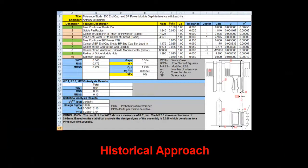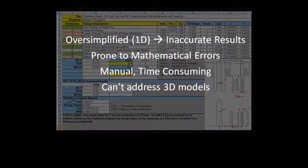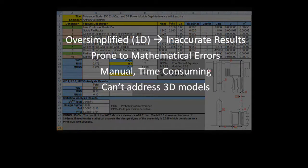Until recently, most companies relied on manual calculations and Excel spreadsheets to address tolerances. But this process was time-consuming, forcing design engineers to make simplifying assumptions about the assembly and the mathematics.